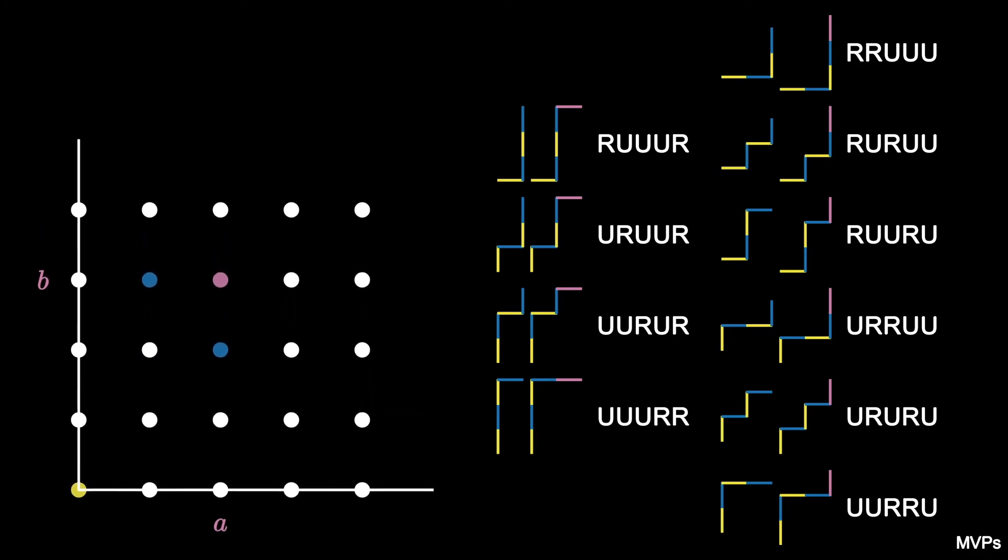Thus, (a+b choose a) equals (a-1+b choose a-1), which is the number of lattice paths to (a-1, b), plus the binomial coefficient (a+b-1 choose a), which is the number of lattice paths to (a, b-1). Replacing a+b by n results in (n choose a) equals (n-1 choose a-1) plus (n-1 choose a). This is the binomial recurrence.